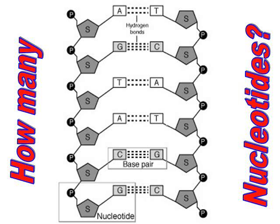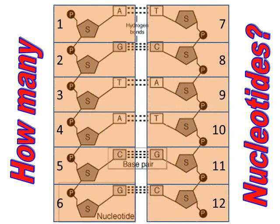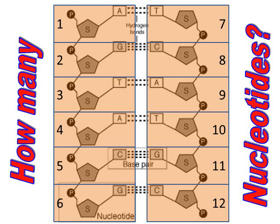Take a moment to answer: how many nucleotides do you see in this picture? A nucleotide is one combination of a sugar, phosphate, and nitrogen base. The answer is 12 — six on the left connected by hydrogen bonds to six on the right.